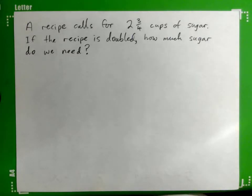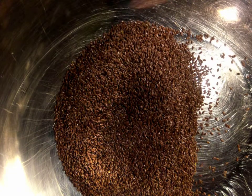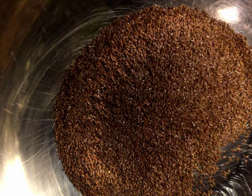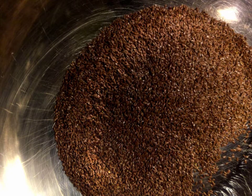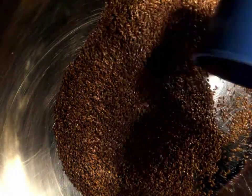All right, so you got a recipe that calls for two and three-quarter cups of sugar. If the recipe is doubled, how much sugar do we need? So here's a cooking bowl. Let's see, two and three-quarter cups is one cup, here's two cups, and three quarters is about this much. We'll put that there.